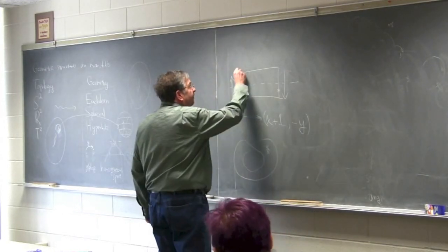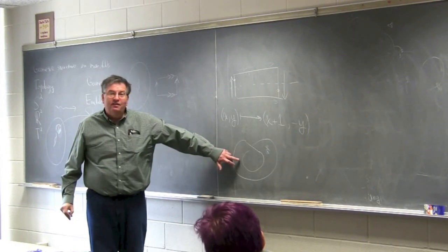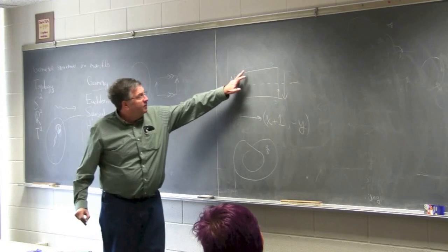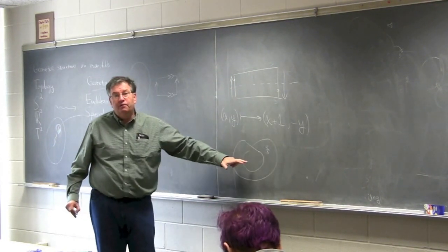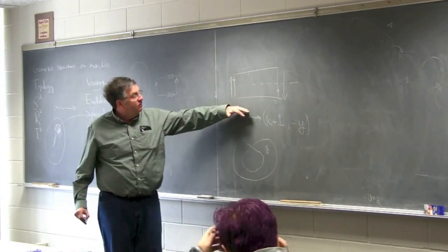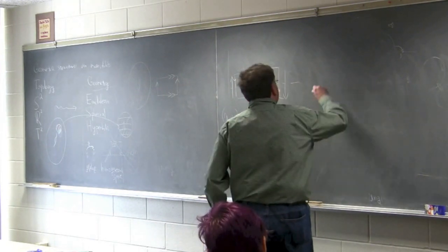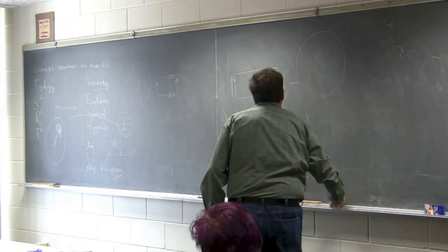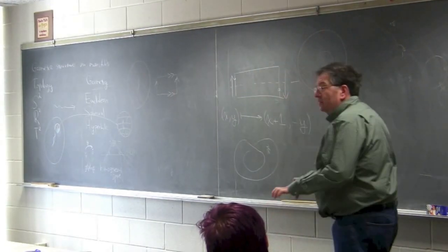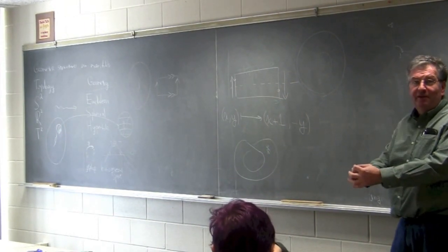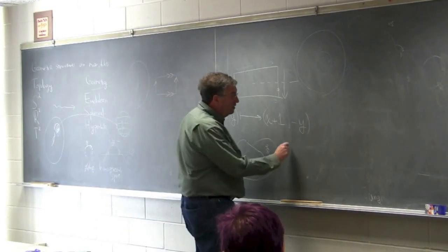Now we can go a bit further. We can take this side here and identify it to this side here. When we first do the first identification, we get a surface that just has one component to its boundary. We could have started by doing the top and bottom identification to get an annulus. We identify the inner curve to the outer curve with the opposite orientation. It's hard to do in free space, but it's possible in your imagination. This gives an interesting surface which now has no boundary, is compact, and that's the Klein bottle.